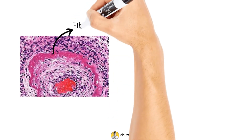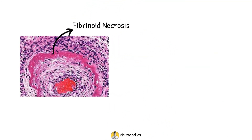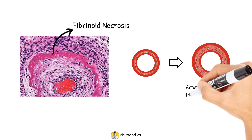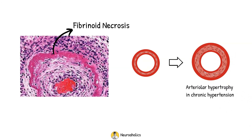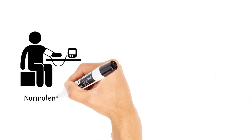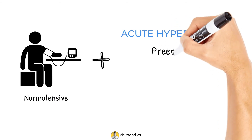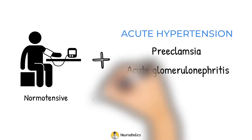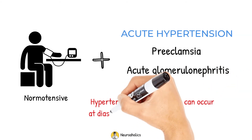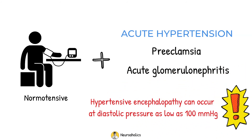The degree of fibrinoid necrosis is determined by the chronic baseline blood pressure prior to the substantial increase in BP. Chronic hypertension patients have arteriolar hypertrophy, which reduces pressure transfer to the capillary circulation. In previously normotensive patients with acute hypertension due to preeclampsia or acute glomerulonephritis, hypertensive encephalopathy can be seen at diastolic pressures as low as 100 mmHg. Patients with impaired autoregulation may also develop hypertensive injury at relatively mild levels of hypertension.